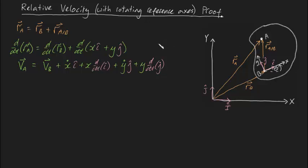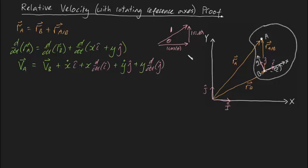Let me draw unit vector i at a larger scale. A unit vector has a magnitude of one, and we can describe it as the sum of component vectors. Because the angle is theta, the horizontal component has magnitude cosine theta and the vertical component has magnitude sine theta. So unit vector lowercase i can be written as cosine(theta) in the capital I-hat direction plus sine(theta) in the capital J-hat direction. That's the most important part of this problem — if you can get that, the rest should be easy.